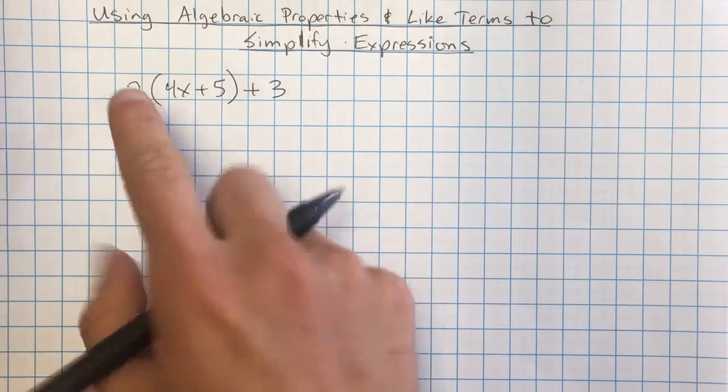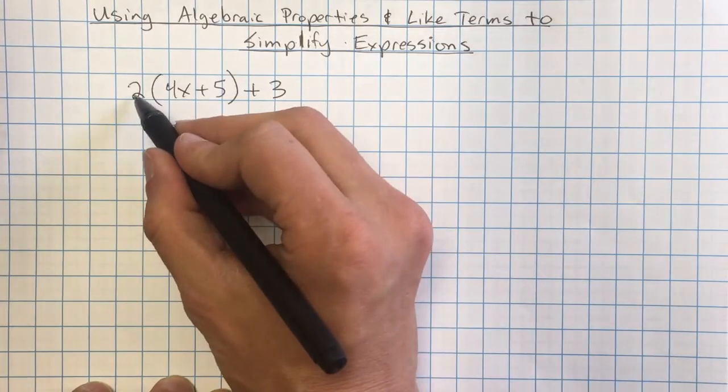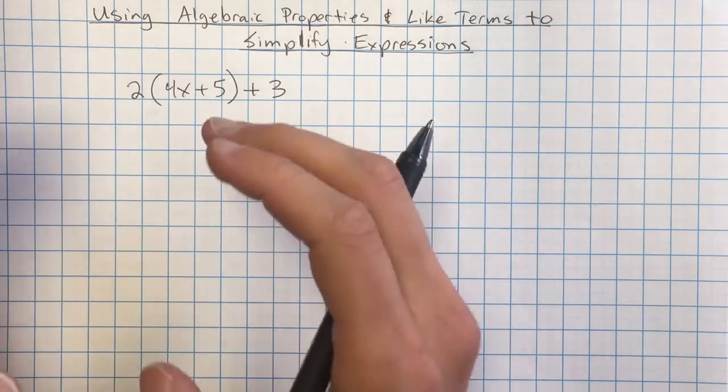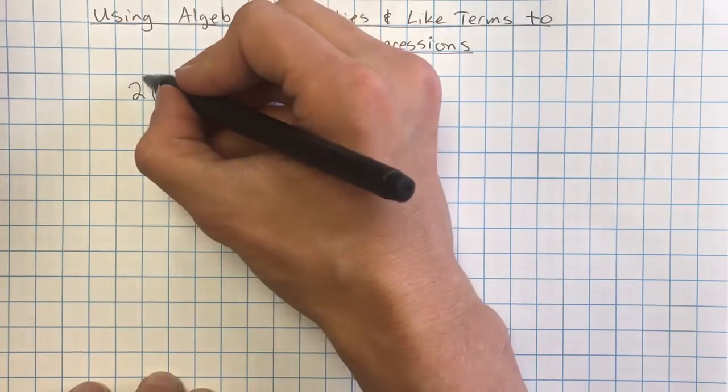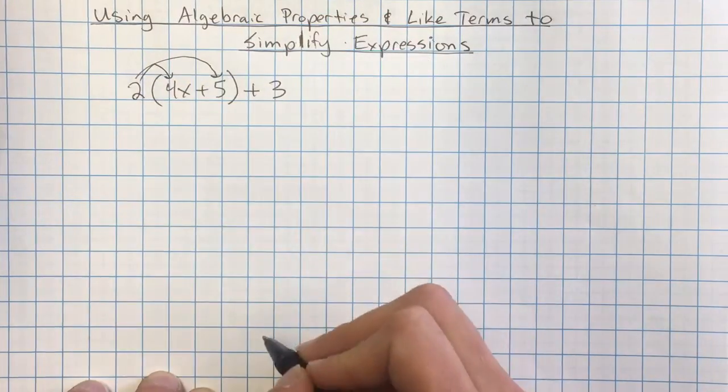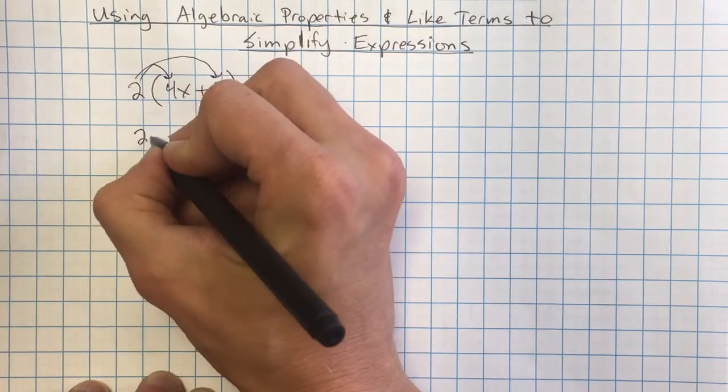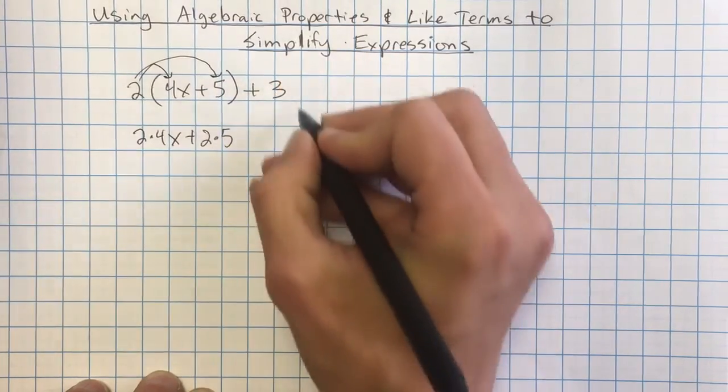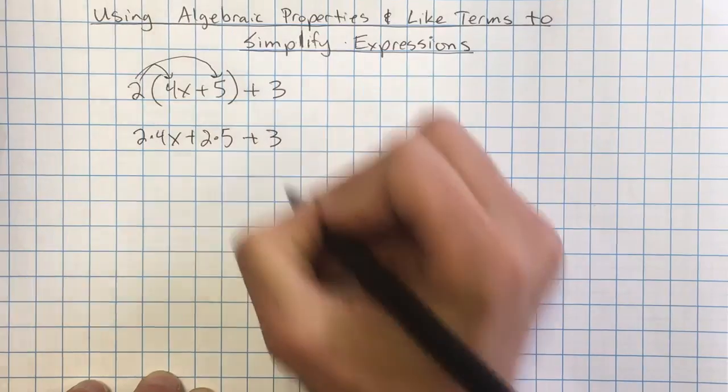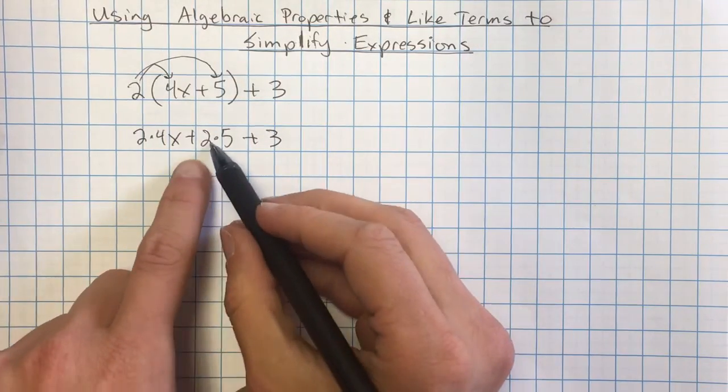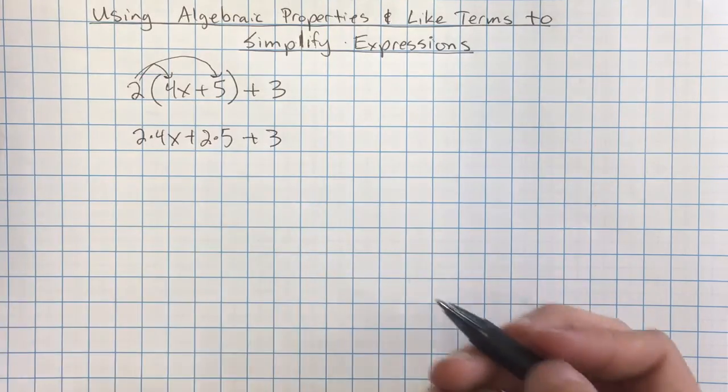Now we're going to use one property, that's the distributive property, because I see I have 2 times something that's being added together. That means we have 2 4x plus 5s. So it's the same thing as saying 2 times 4x plus 2 times 5. So I would write that out as 2 times 4x plus 2 times 5. And I'm going to bring down the other part that I have. Now I want to start doing some of the math so I can multiply some of these things.